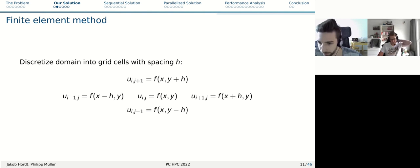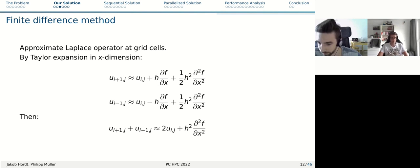For example, for this center point, we index this function, and these are the neighbor above, to the left, to the right, and the neighbor below that cell. This is for a two-dimensional setting with a spacing H, and these grid cells are H apart.